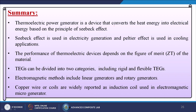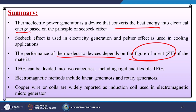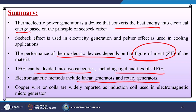To summarize this lecture: A thermoelectric power generator is a device that converts heat energy into electrical energy based on the Seebeck effect. The Seebeck effect is used in electricity generation and the Peltier effect is used in cooling applications. The performance of thermoelectric devices depends on the figure of merit. TIGs can be divided into two categories: rigid and flexible TIGs. Electromagnetic methods include linear generators and rotary generators. Copper wire or coils are widely reported as induction coils used in electromagnetic micro-generators. Thank you.